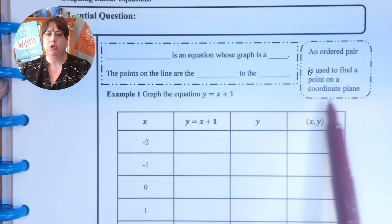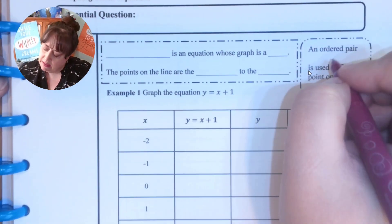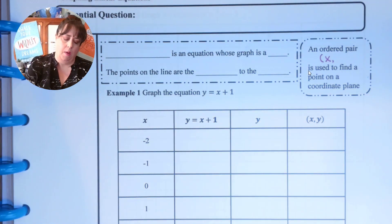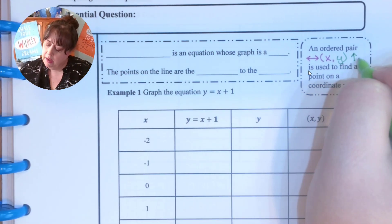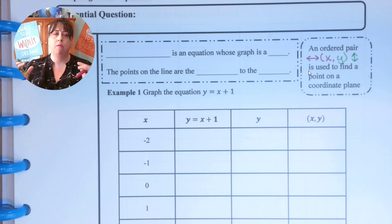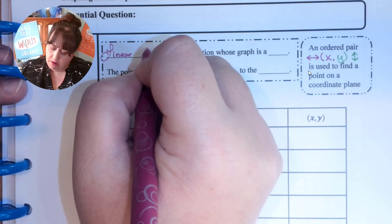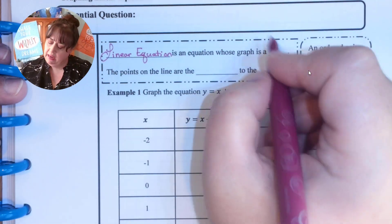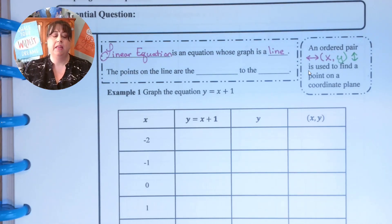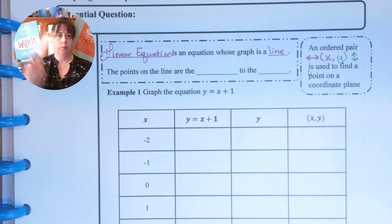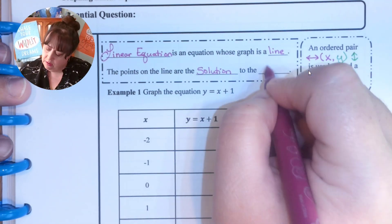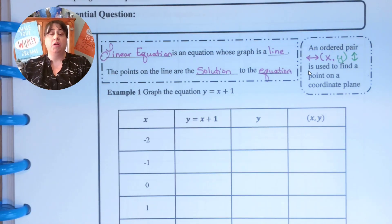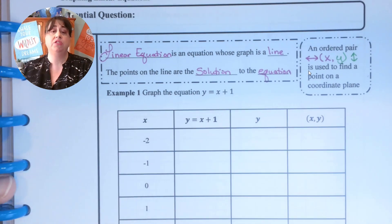First off, let's look at an ordered pair. An ordered pair goes like this: x and y. X's go across or horizontal, and y's are vertical or up and down. They always go in that order and they are always with parentheses. A linear equation is an equation whose graph is a line, so everything that we're going to be doing is a line. That is why you need a ruler. The points on the line are the solution to the equation.